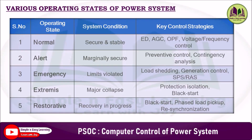In summary, there are five operating states of a power system: Normal — system is secure and stable; key strategies are economic dispatch, automatic generation control, optimal power flow, and voltage/frequency control. Alert — system is marginally secure; key strategies are preventive control and contingency analysis. Emergency — operating limits are violated; key strategies are load shedding, generation control, and special protection schemes. Extremist — major collapse occurred; strategies involve protection isolation and black start. Restorative — recovery in progress; strategies include black start, phased load pickup, and resynchronization.